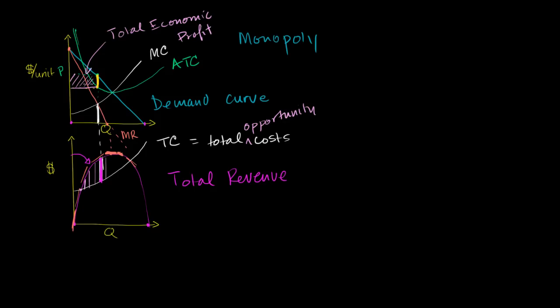If we didn't have a monopoly, we wouldn't have this downward-sloping marginal revenue curve. In perfect competition, we would have to be price takers, and we would actually have a horizontal marginal revenue curve.